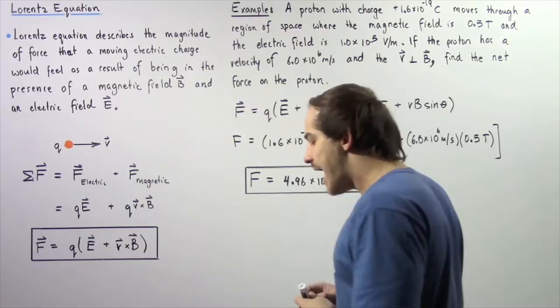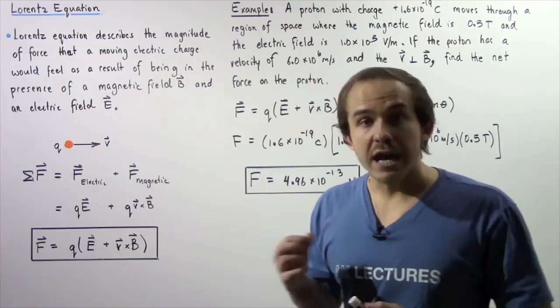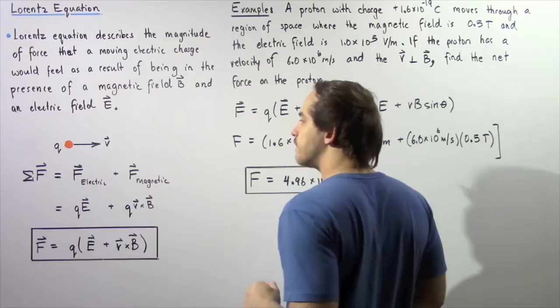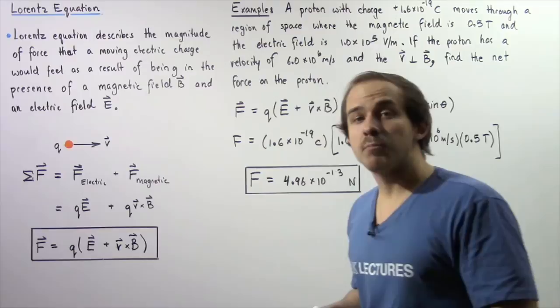Now let's calculate the net force that acts on our charge. If we neglect any type of gravitational force, the net force acting on our charge is simply equal to the electric force — the force as a result of the electric field — and the magnetic force, the force acting on the charge as a result of a magnetic field B. By definition, our electric force is given by taking the product of our charge Q and the electric field E.